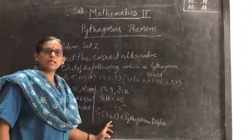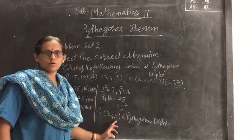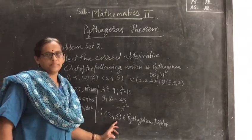Like this, you have to go for multiple choice questions. Remaining questions, you will observe in your Pythagorean triplet. Thank you.